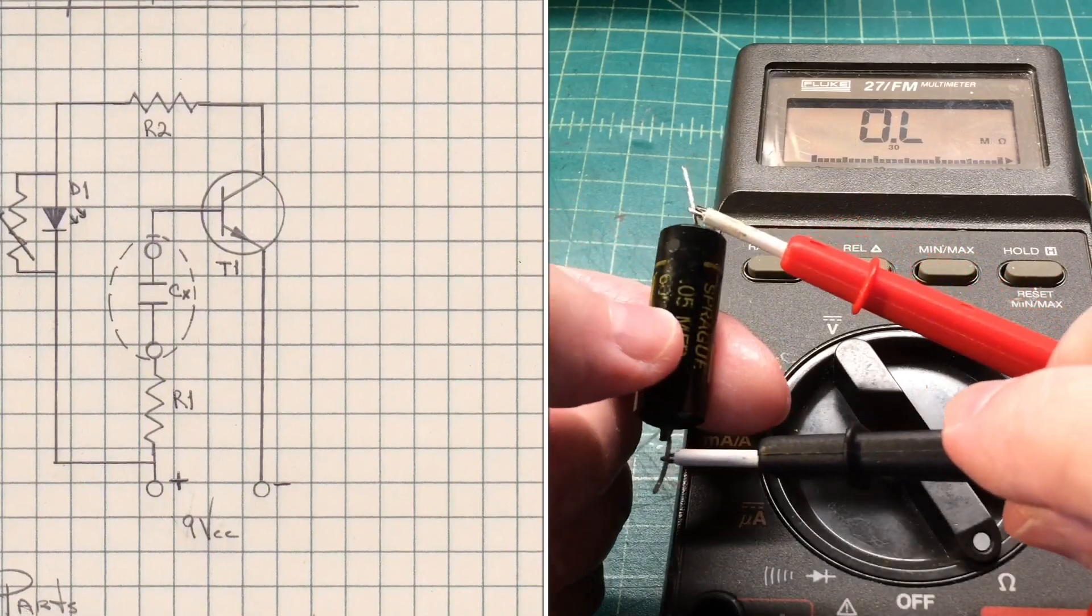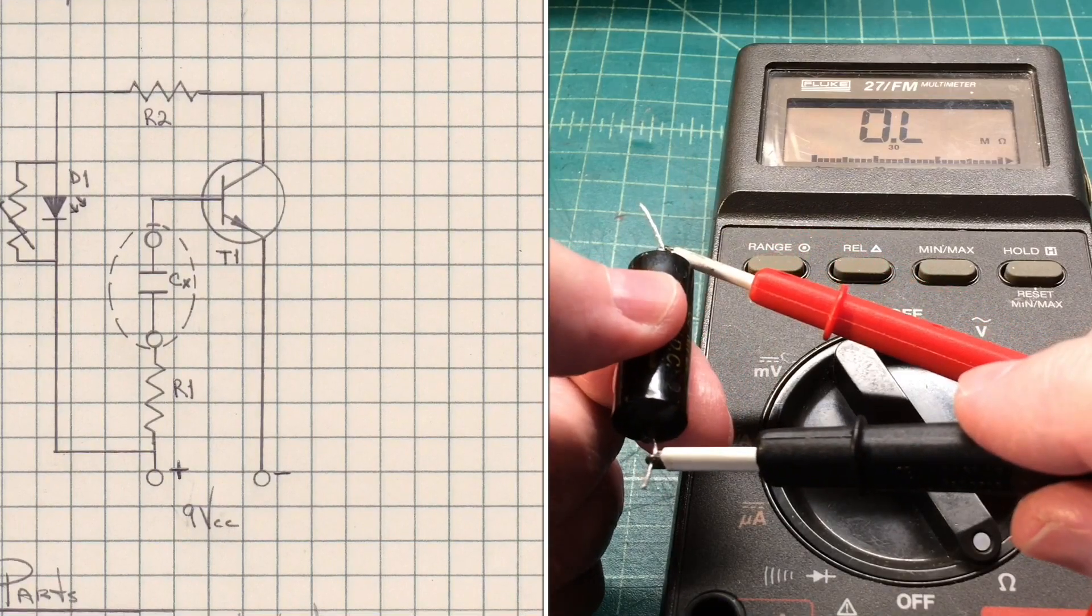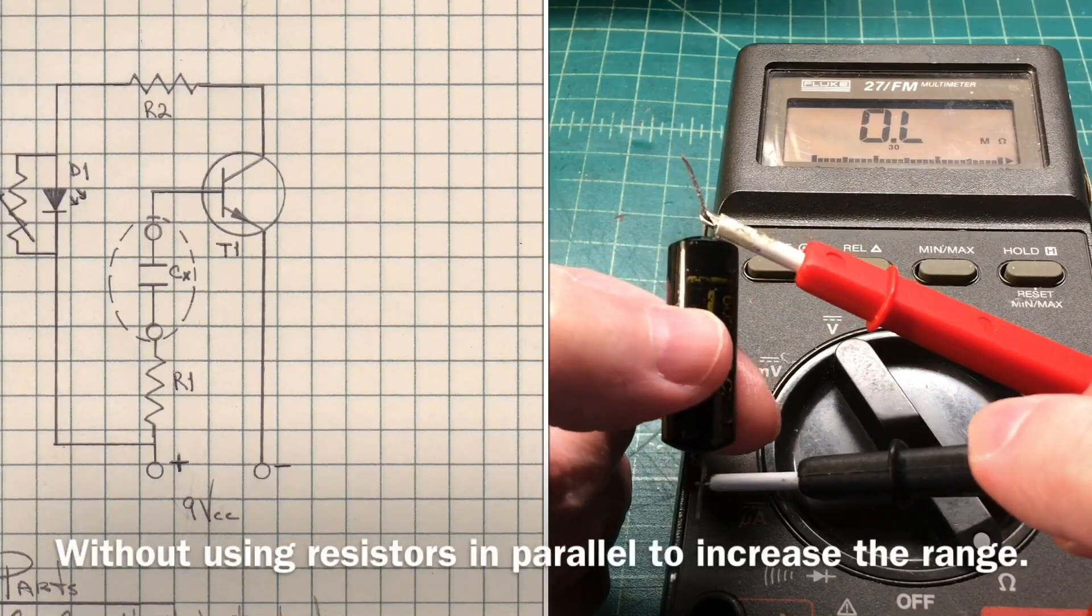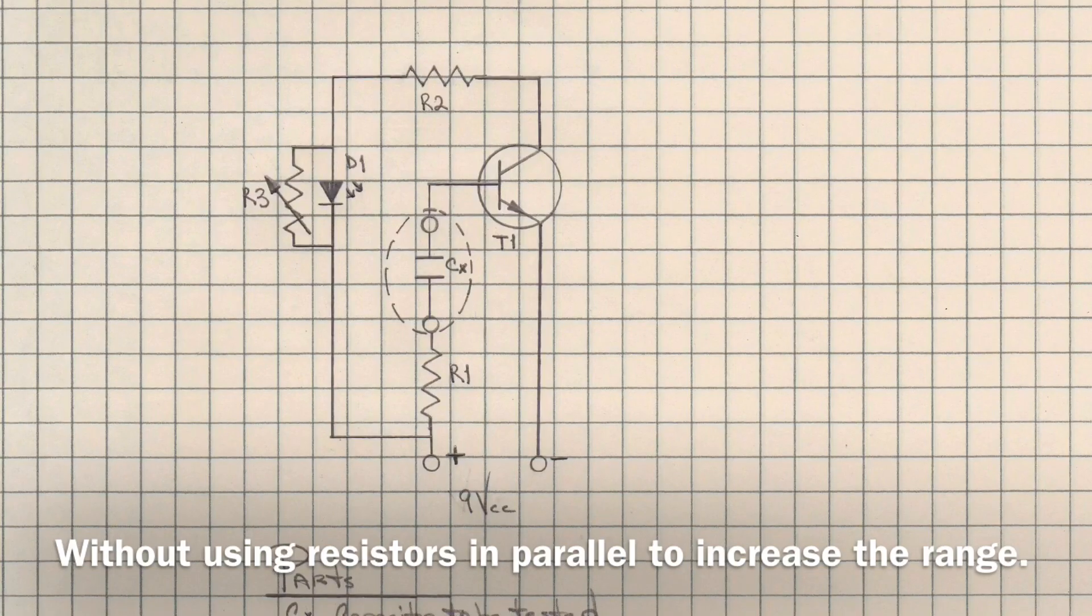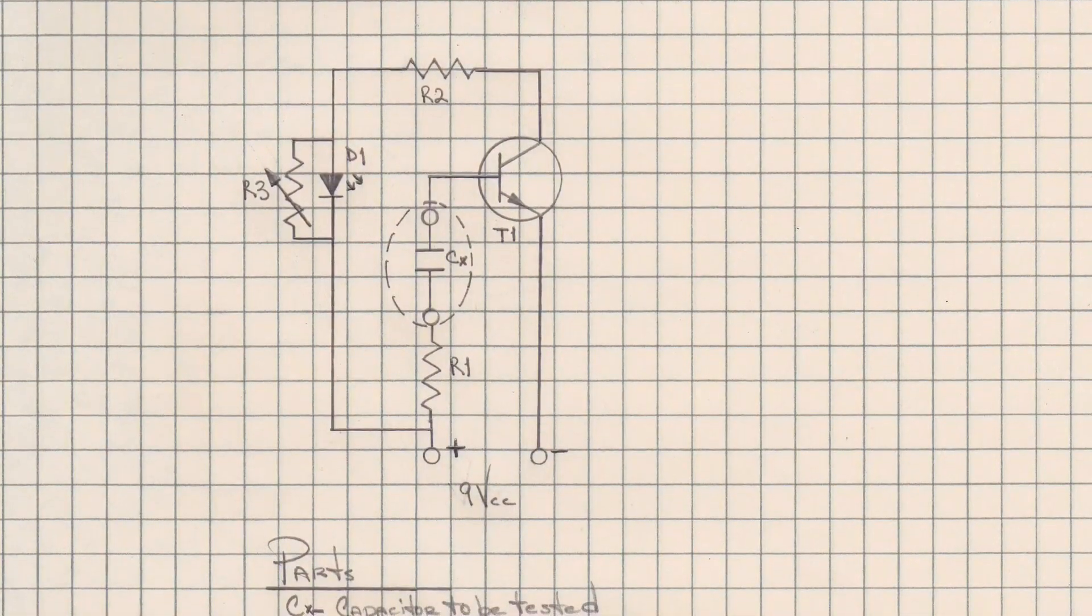Other times you're outside the range of the meter itself. For example, using my Fluke meter, I'm limited to 30 million ohms. A VTVM of course would let me go higher.